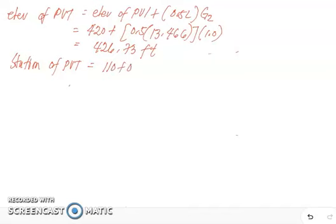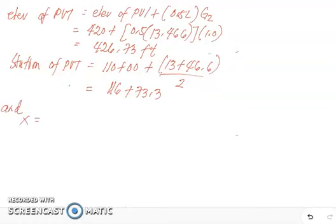Therefore, the station of PVT is equal to 110+00 plus 13+46.6 divided by 2, which gives us 116+73.3. We can now compute x, the distance of the point of interest at station 112+00. The equation gives us 0.5 of L plus 2.0, so half of 13.466 is 6.73, plus 2.0 gives us 8.733 stations.